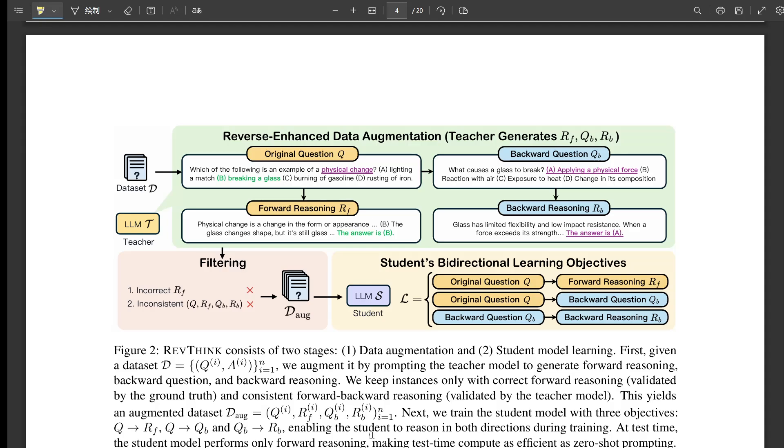They also found that the way they combined all three objectives into one learning process was super important. That gave them the best results. There's something about learning all these things together that really makes a difference. They compared Rethink to this other method called answer augmentation, where you just add more correct forward reasoning chains to the data. It did help a bit, but when they combined it with Rethink, the results were even better. So Rethink works well on its own, but it can also make other methods even better.